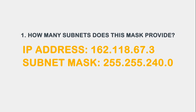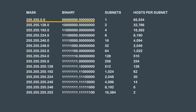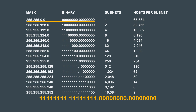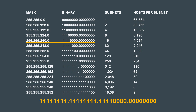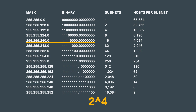Let's work on a few more examples. For the second example, we will answer the same six questions with a different subnet mask. Question 1: How many subnets does this mask provide? To calculate the number of subnets, we need to observe how many bits we have borrowed from our default Class B subnet mask, then use the 2 to the n formula. The default subnet mask for a Class B network is 255.255.0.0. As you can see, we are borrowing 4 bits from the original default Class B subnet mask. Using our 2 to the n formula, where n equals the number of borrowed bits, we get 2 to the power of 4. So our answer to question 1 is 2 to the power of 4 equals 16 subnets.